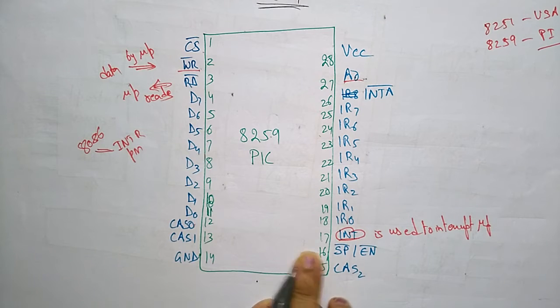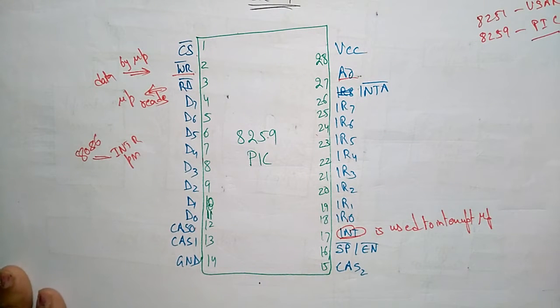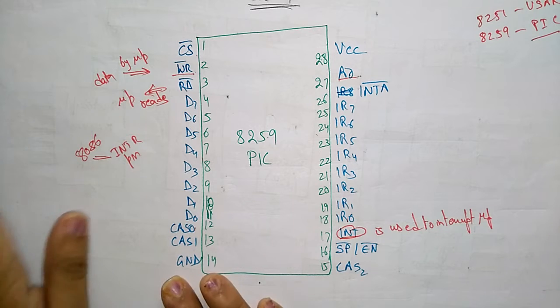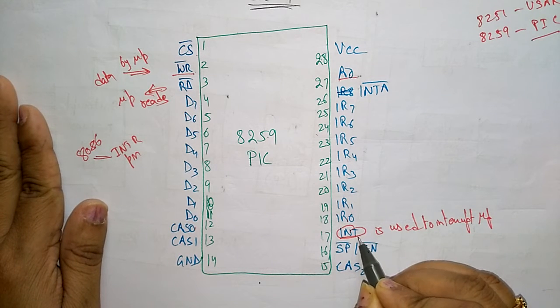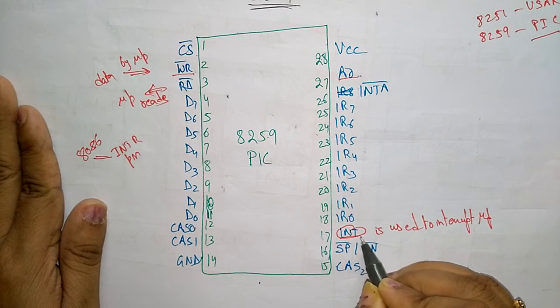It is saying to the microprocessor that some external devices are requesting to operate on important data. Then the processor will halt whatever operation it is performing, whatever program it is executing, keep it on hold, and it takes the interrupt request and performs the operation. Again it sends the result and continues with the previous work. That is what the microprocessor will do.